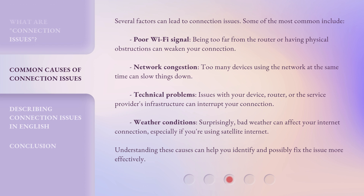Several factors can lead to connection issues. Some of the most common include: poor Wi-Fi signal — being too far from the router or having physical obstructions can weaken your connection; network congestion — too many devices using the network at the same time can slow things down; technical problems — issues with your device, router, or the service provider's infrastructure can interrupt your connection; and weather conditions — surprisingly, bad weather can affect your internet connection, especially if you're using satellite internet. Understanding these causes can help you identify and possibly fix the issue more effectively.